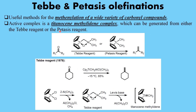Let us try to understand their chemistry. These two reagents carry out the methylenation of various types of carbonyl compounds, and the actual species responsible for carrying out the reaction is titanocene methylidene. This is what is formed in both cases. However, their mode of generation is different.